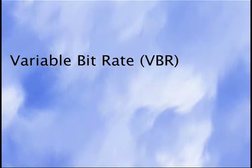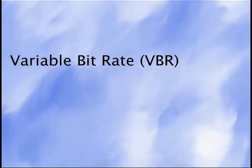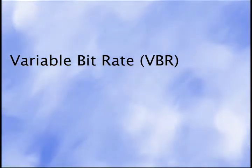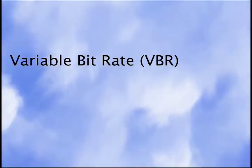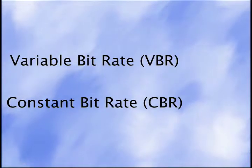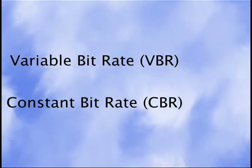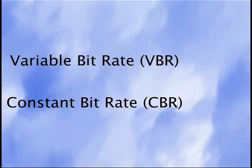If you choose to compress your content yourself, it's important to be aware of the following terms and concepts. Variable bitrate uses less disk space while producing higher quality. The downside is it takes more time to process. Constant bitrate, CBR, is faster but produces a larger file size for the same quality.